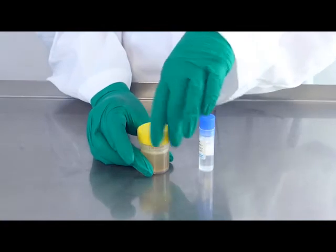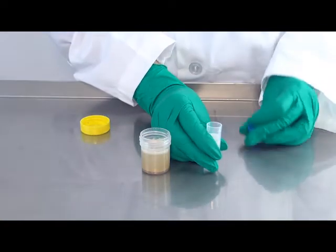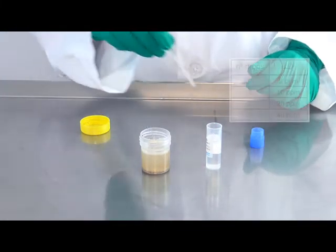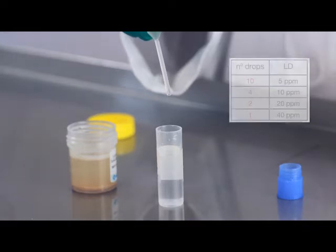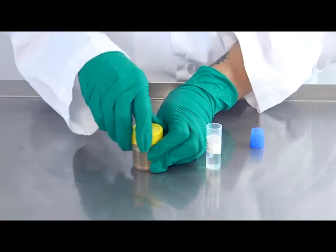Open the extraction bottle with the yellow cap and one dilution vial with the blue cap. Take a disposable plastic pipette and using the number of drops indicated on the manual, transfer the liquid from the extraction solution with the yellow cap to the dilution vial with the blue cap. Dispose of the used pipette.